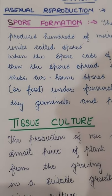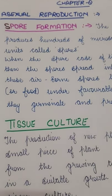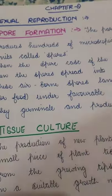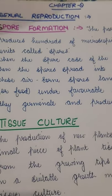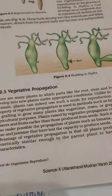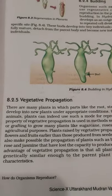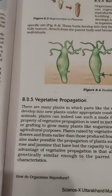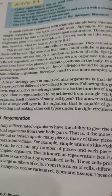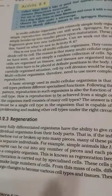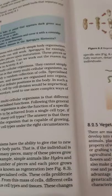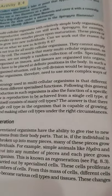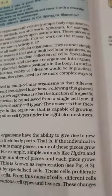We also read about vegetative propagation, which is quite different from fragmentation, regeneration, and budding. Fragmentation, regeneration, binary fission, and multiple fission take place in microorganisms — smaller, unicellular organisms like amoeba and algae.